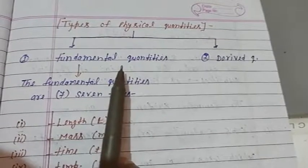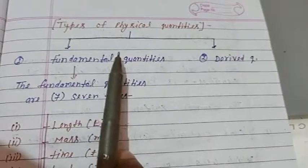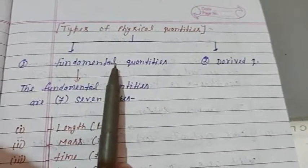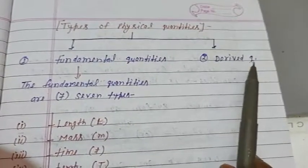In this video lecture, I will explain you about types of physical quantities. Mainly, physical quantity is divided into two parts: first is fundamental quantities, second is derived quantities.